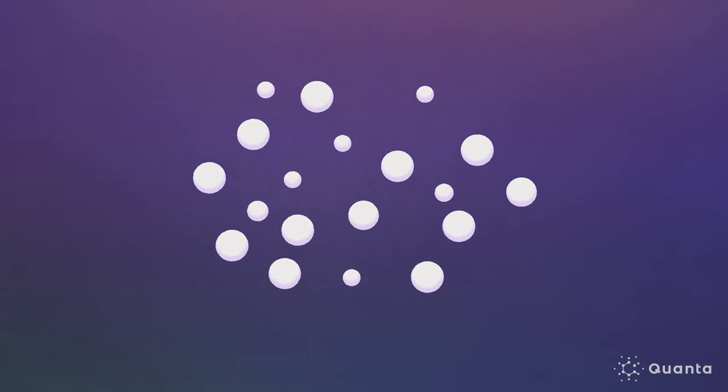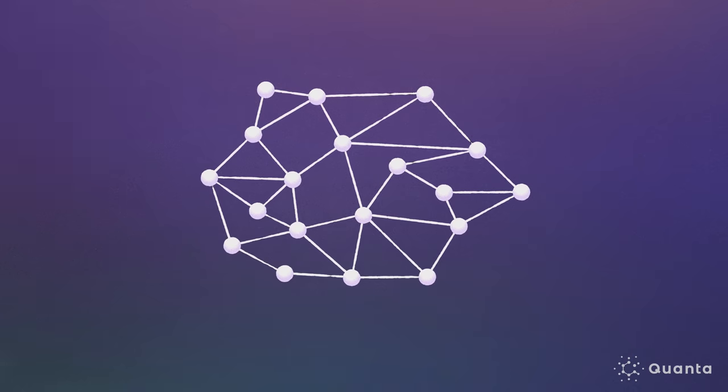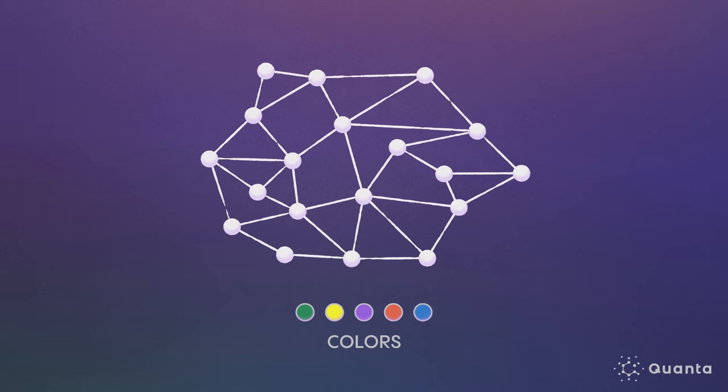If the four color theorem is false, there must be a graph that requires at least five colors. This is known as a minimal counterexample. Kemp wanted to show that he could color this graph with four colors. If he could, then a minimal counterexample must not exist in the first place.